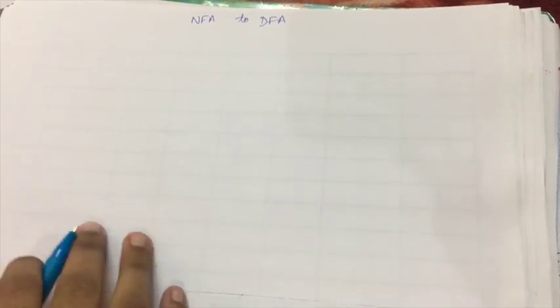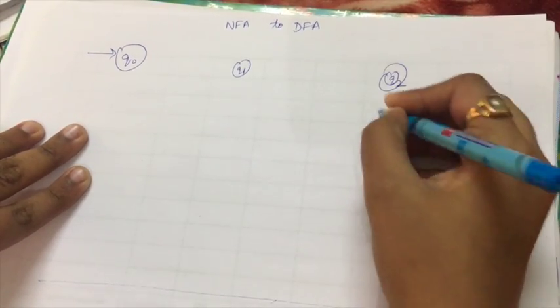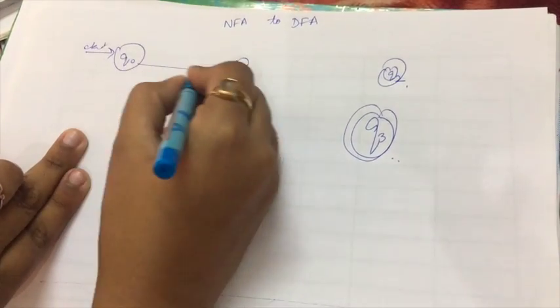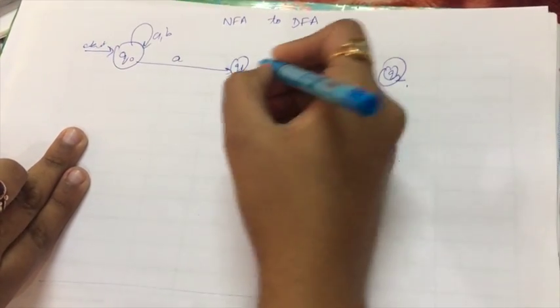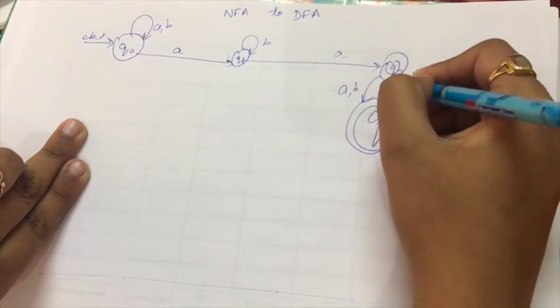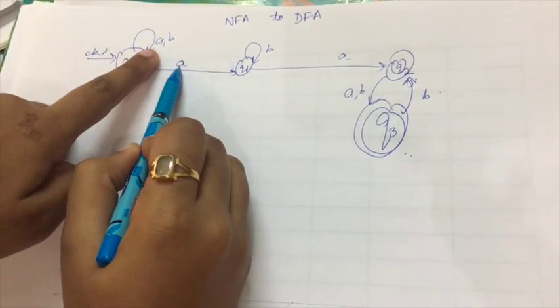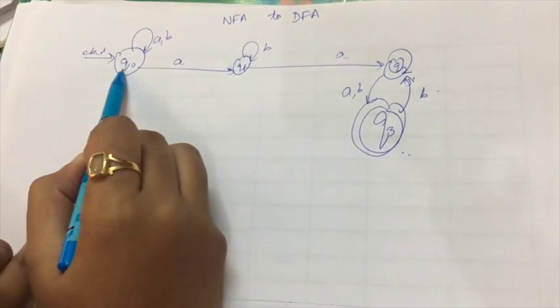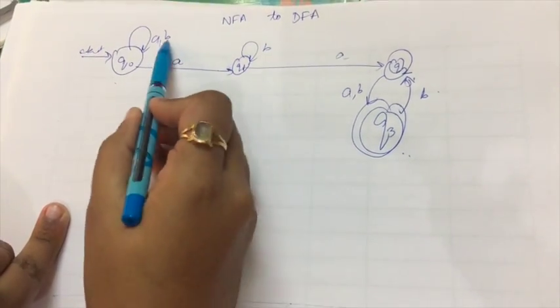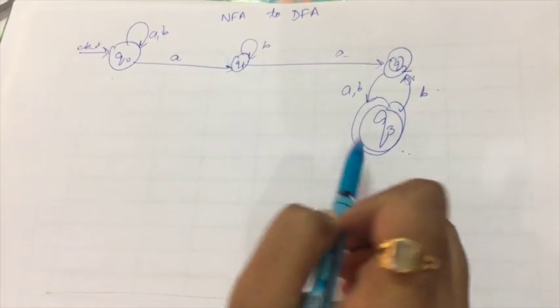We are going to convert a given NFA to DFA. Suppose we have states Q0, Q1, Q2, and Q3, where Q2 and Q3 are the two final states and Q0 is the starting state. For example, when Q0 is given input symbol A, it gives two different states — Q0 and Q1 — which is the property of an NFA. When given B, Q0 gives only one state.